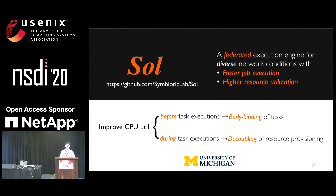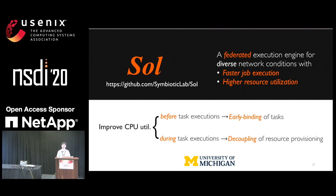To recap, SOAR is a federated execution engine for diverse network conditions. It can provide faster job execution and high resource utilization. In designing SOAR, we want to improve CPU utilization. To this end, we introduce early binding of tasks in the control plane, and the decoupling of resource provisioning in the data plane. SOAR is available on the website and we plan to release more. That's all from me about SOAR, and I'm happy to take questions. Thank you.